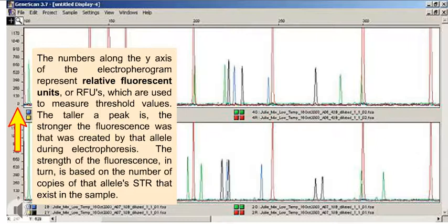The numbers along the y-axis of the electropherogram represent relative fluorescent units, or RFUs, which are used to measure threshold values. The taller a peak is, the stronger the fluorescence was that was created by that allele during electrophoresis. The strength of the fluorescence, in turn, is based on the number of copies of that allele's STR that exist in the sample.